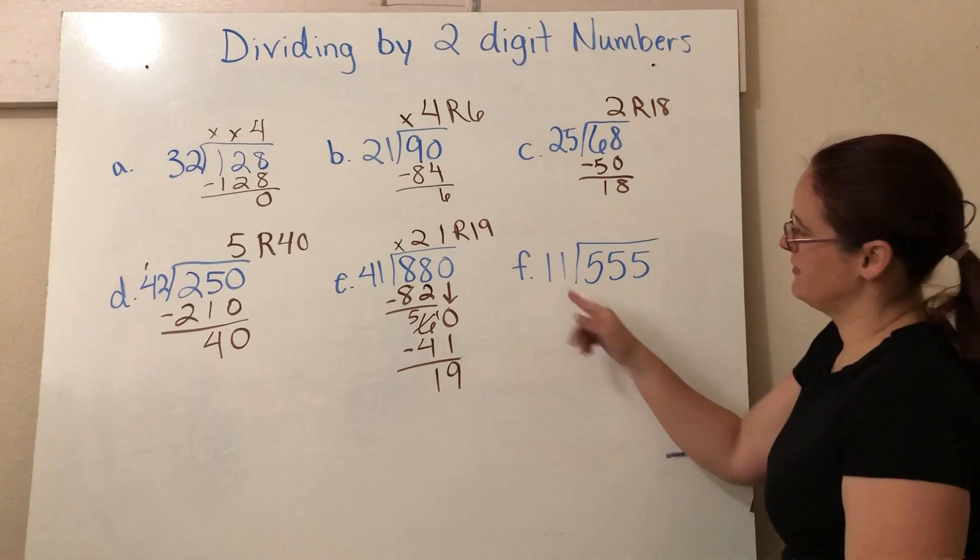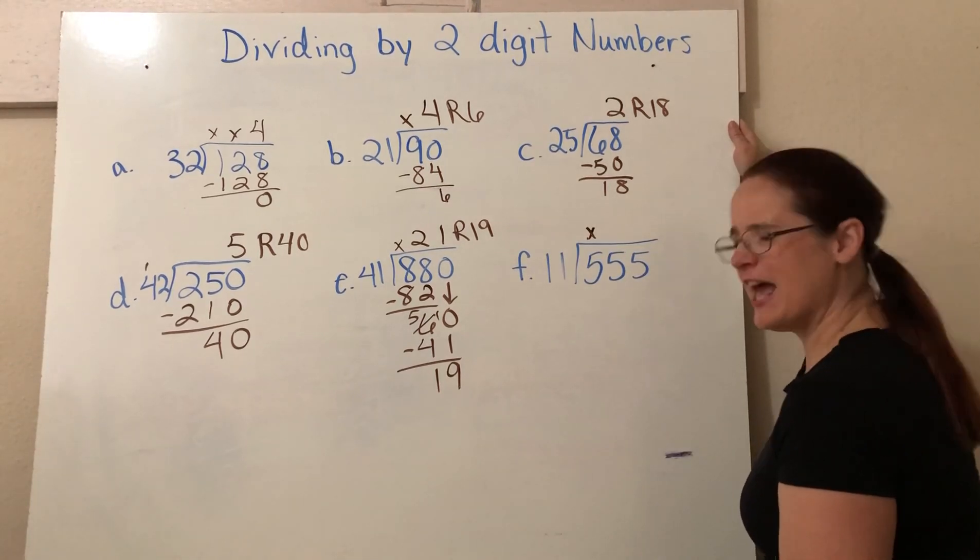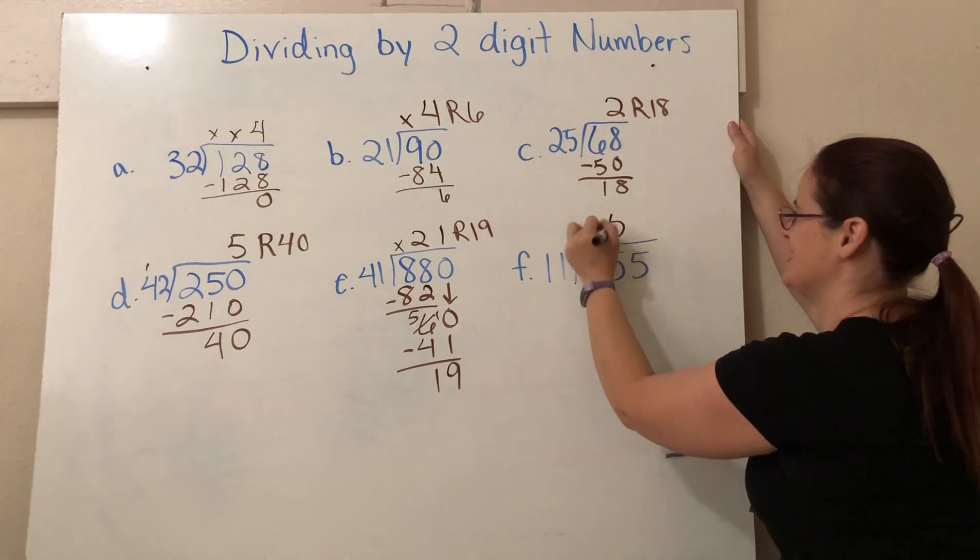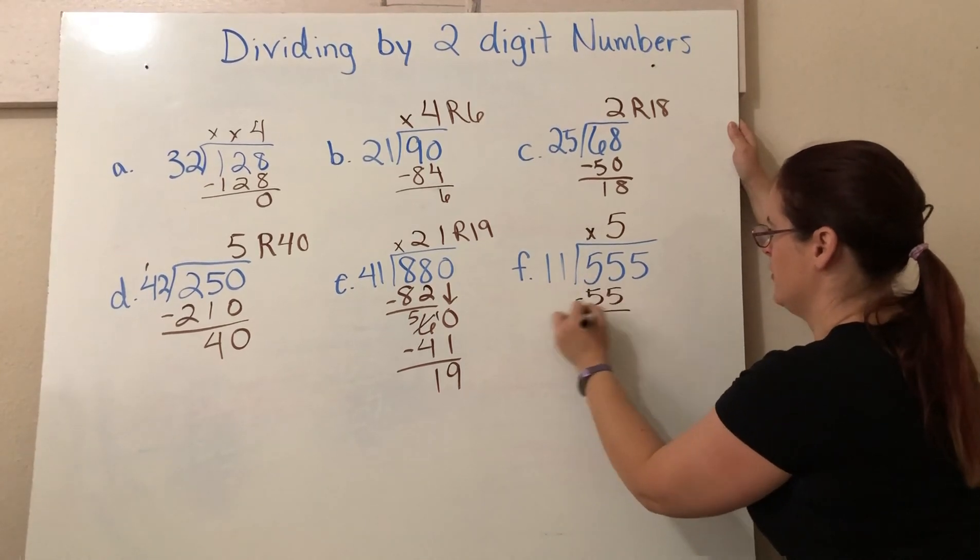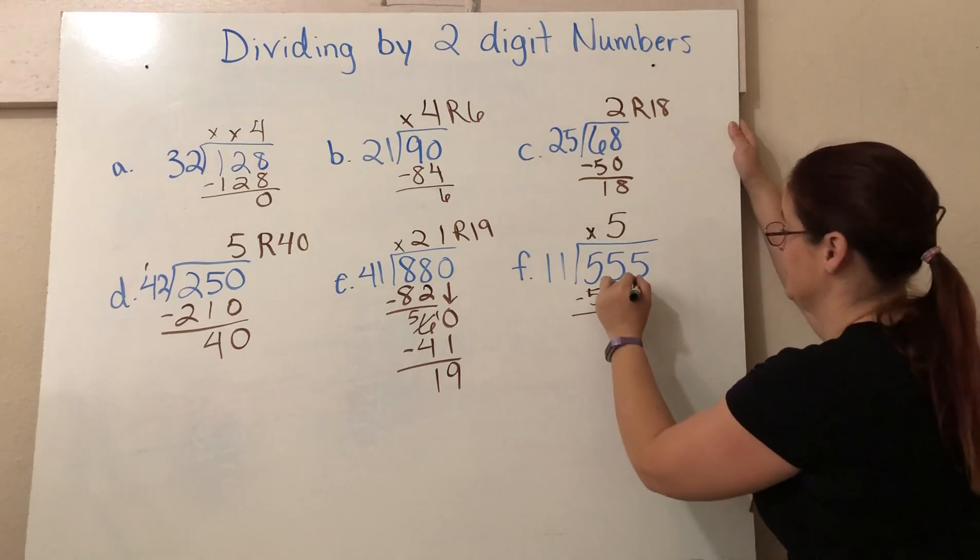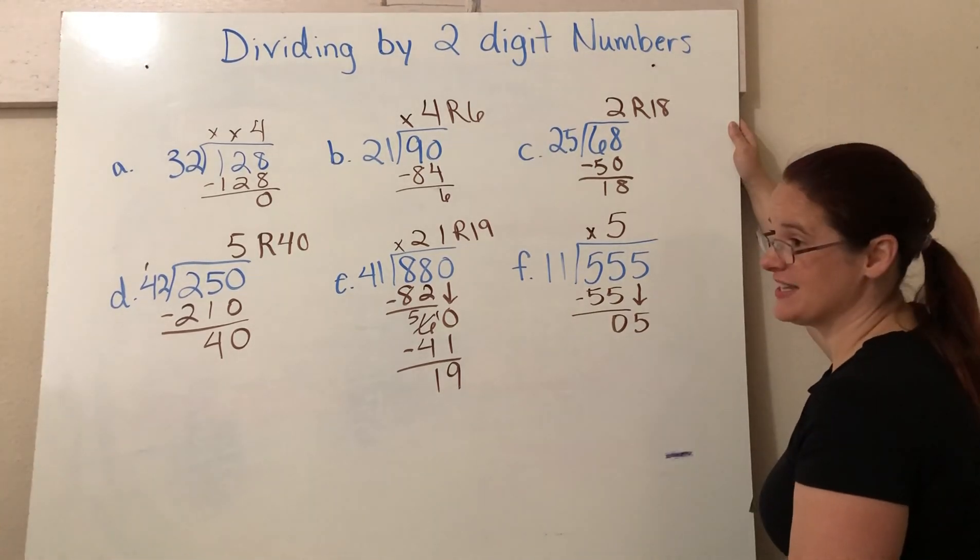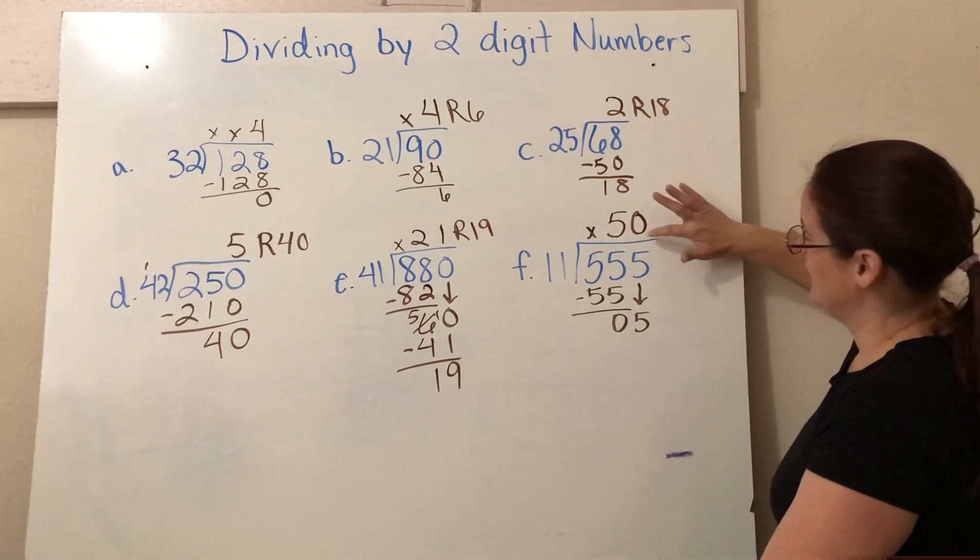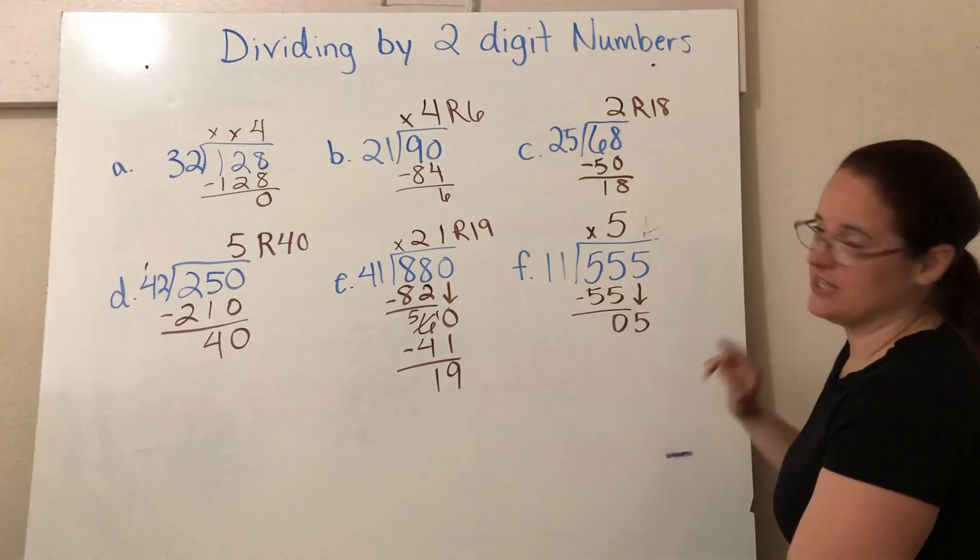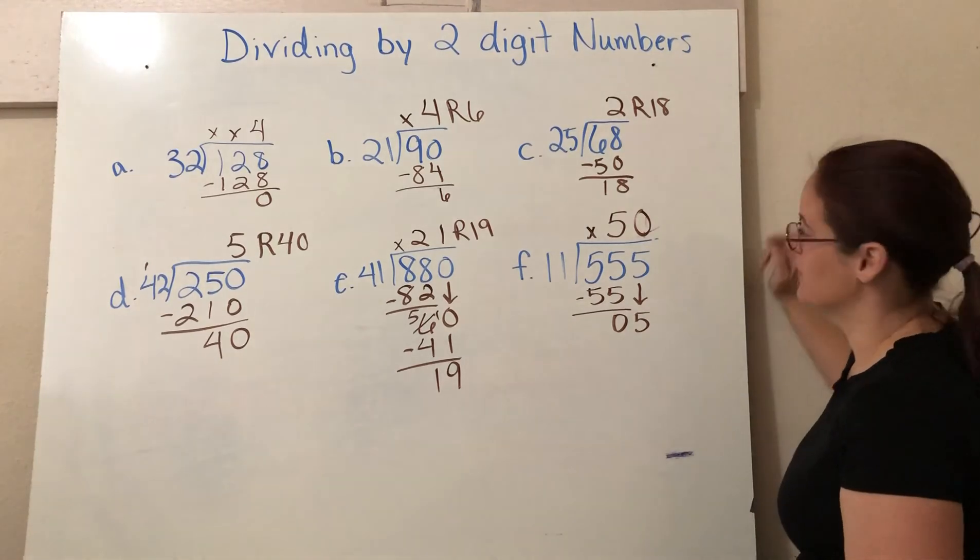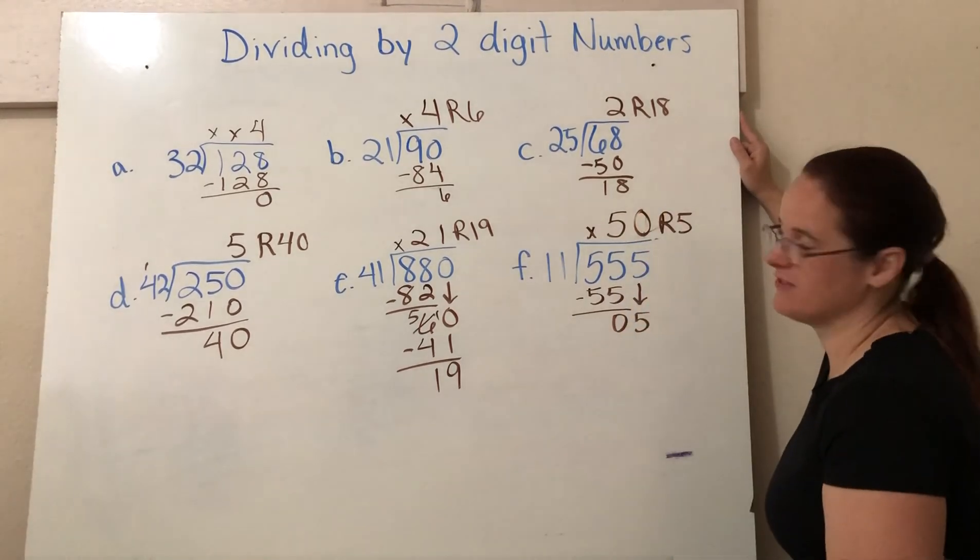Okay. And finally here we have 555 divided by 11. Does 11 go into 5? No. Does it go into 55? How many times? Five. We know it goes in exactly five times. So five times 11 is 55. We subtract. We get nothing. However, I have to bring down my five. Does 11 go into 5? No, it does not. It goes in zero times. And then five is our remainder. You have to fill in your place value here. I can't just leave it as five. If there's another digit in your number, you have to fill in a zero for your answer. So zero times 11 is zero, which means my remainder is going to be five. 50 remainder five.